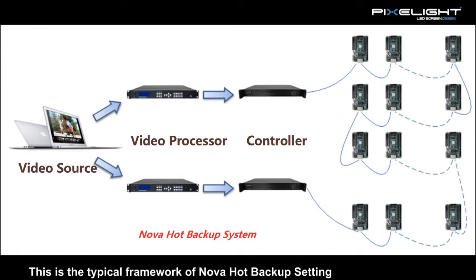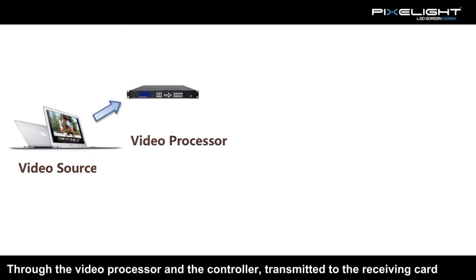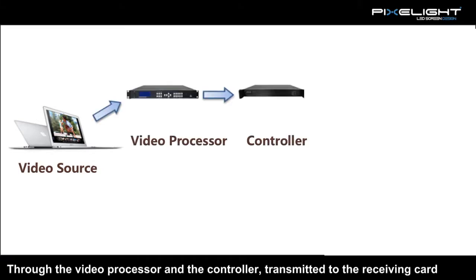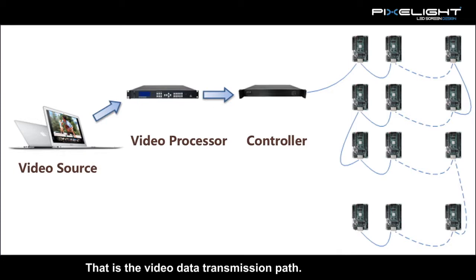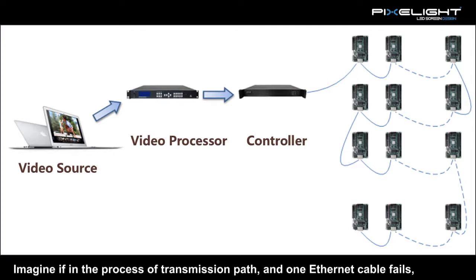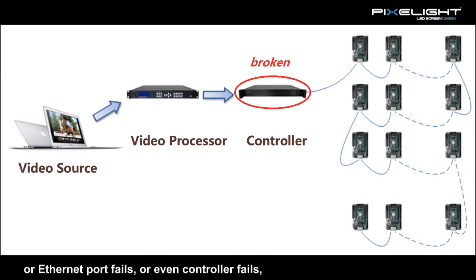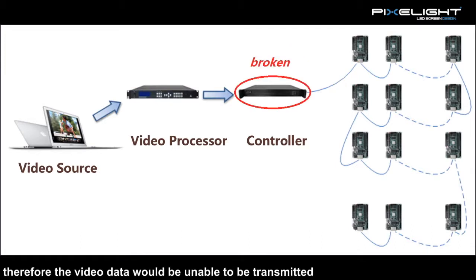This is the typical framework of the NOVA hub backup setting. As shown in the picture, the video data travels from the video source through the video processor and controller, then is transmitted to the receiving card and screen — that is the video data transmission path. If during this transmission path an Ethernet cable fails, an Ethernet port fails, or even the controller fails, the video data will be unable to be transmitted and the screen will go black.